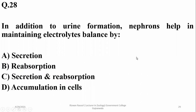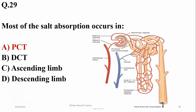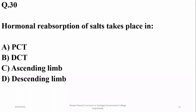In addition to urine formation, nephrons help in maintaining electrolyte balance by secretion as well as reabsorption of ions, so Charlie. Most salt absorption occurs in the PCT or proximal convoluted tubule, and hormonal reabsorption of salts takes place only in the ascending limb of the loop of Henle.